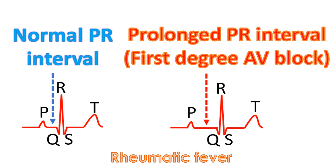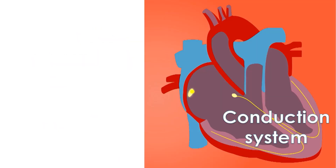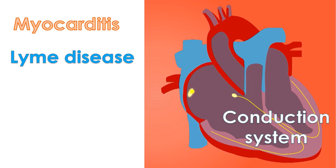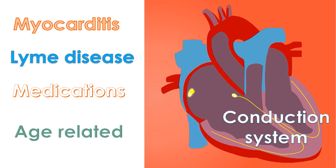First degree heart block can also occur in a heart attack involving the lower part of the heart, known as inferior wall myocardial infarction. Other causes are inflammation of heart muscle known as myocarditis, Lyme disease caused by a bacterial infection, and some medications which slow the electrical conduction of the heart, typically given to control heart rhythm abnormalities. Sometimes it can be due to age-related degeneration in the electrical conduction system of the heart.